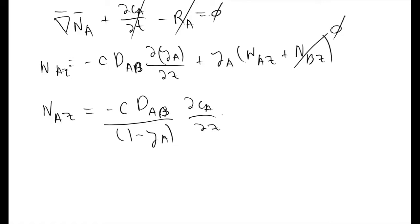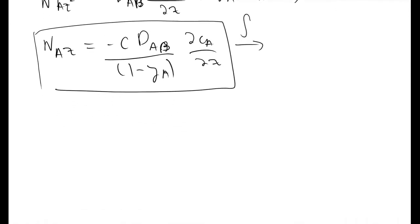From this equation, what we're going to do is integrate it. What we will have is that the integral from Z1 to Z2 of NAZ dZ must be equal to minus CDAB times the integral from YA1 to YA2 of dYA over 1 minus YA.